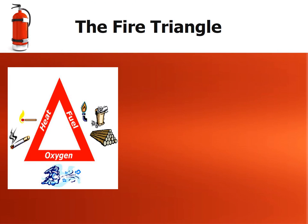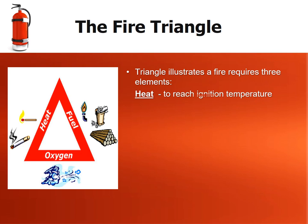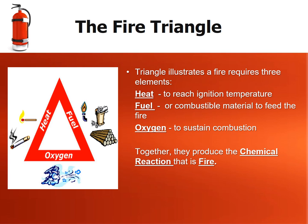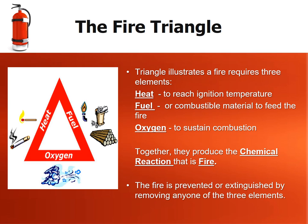The Fire Triangle is a simple model used to understand the ingredients necessary for most fires. The triangle illustrates that a fire requires three elements: heat to reach ignition temperature, fuel or combustible material to feed the fire, and oxygen to sustain combustion. Together they produce the chemical reaction that is fire. The fire is prevented or extinguished by removing any one of the three elements. Keep fuel and ignition sources separate.